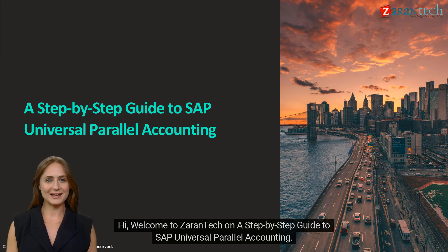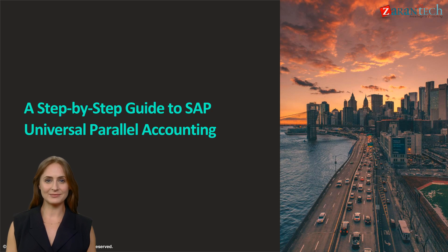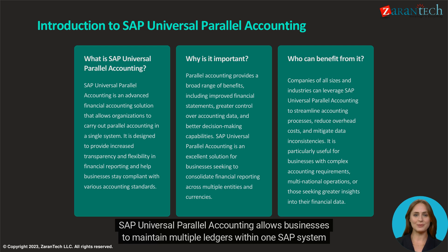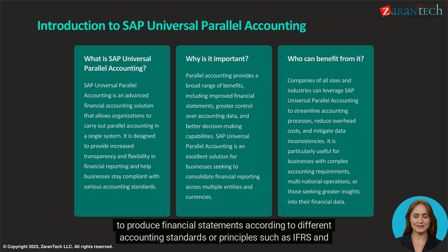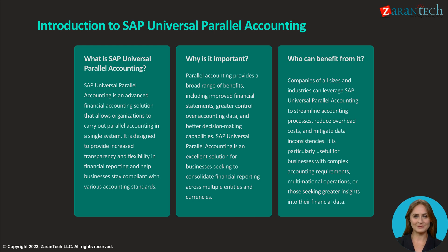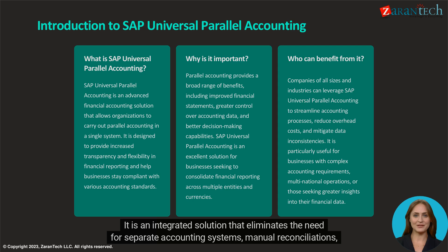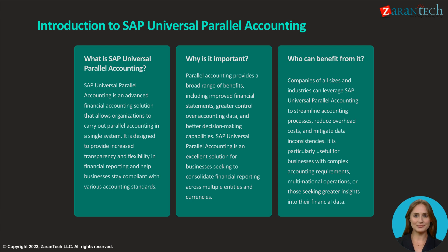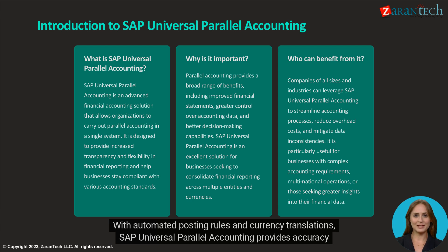Hi, welcome to Zarin Tech on a step-by-step guide to SAP Universal Parallel Accounting. SAP Universal Parallel Accounting allows businesses to maintain multiple ledgers within one SAP system to produce financial statements according to different accounting standards or principles such as IFRS and local GAAP. It is an integrated solution that eliminates the need for separate accounting systems, manual reconciliations, and Excel spreadsheets. With automated posting rules and currency translations, SAP Universal Parallel Accounting provides accuracy and efficiency.